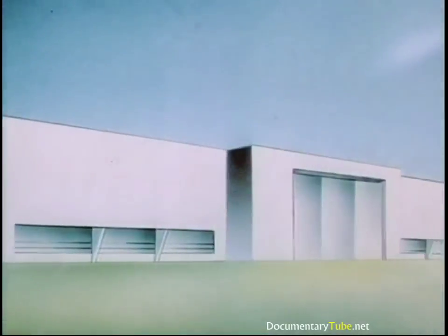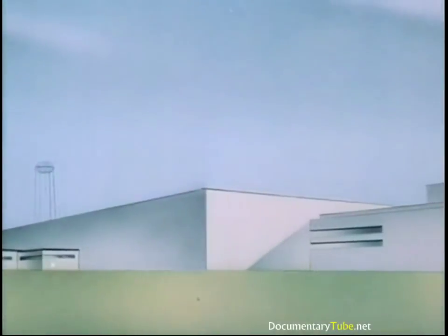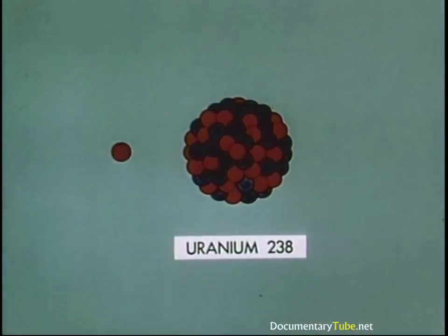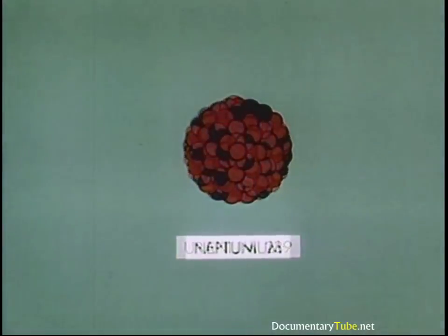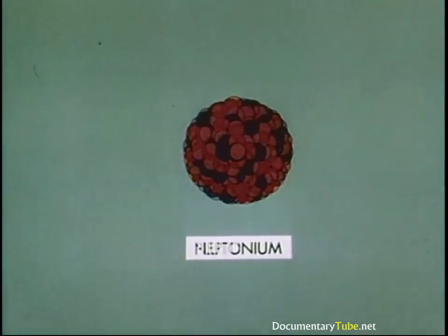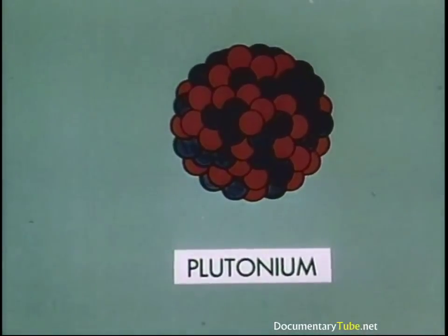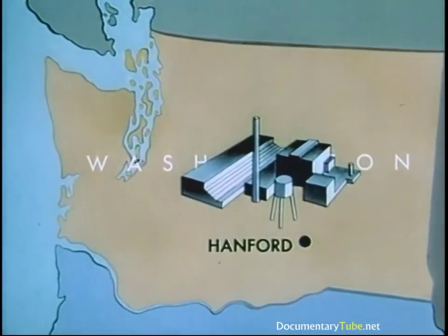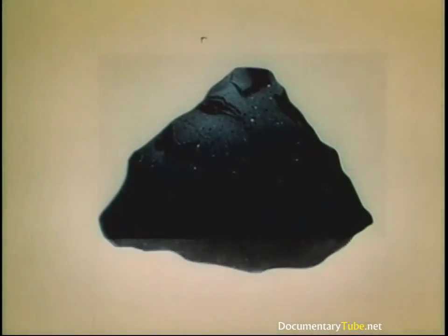The Manhattan Engineer District team of scientists, engineers, industrialists, labor, and military built huge plants to produce the material by this and other means. The scientists went further, taking advantage of the fact that uranium-238, instead of fissioning, tends to capture neutrons to ultimately become plutonium, and plutonium is as effective for fissioning as uranium-235. The Manhattan Engineer District team built a plutonium plant at Hanford, Washington. Our bomb builders were nearing the goal — they had the substance; now for the shape.